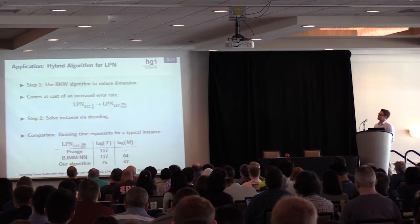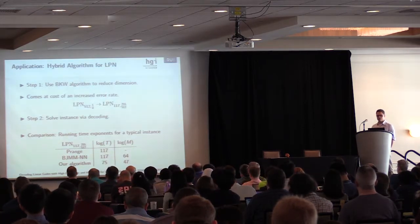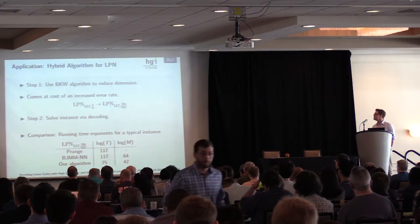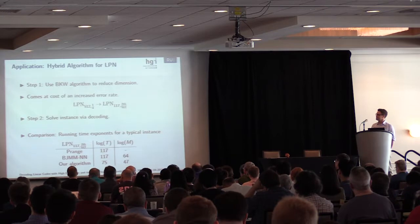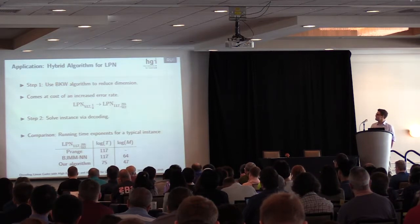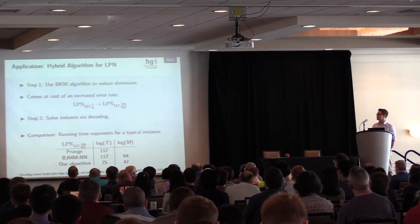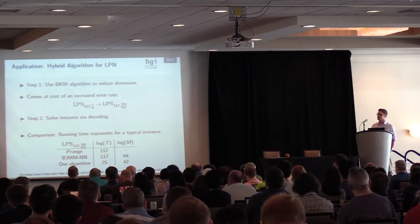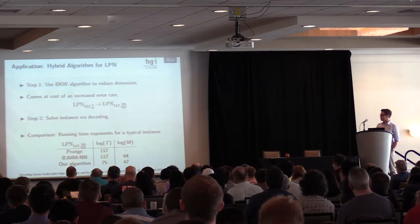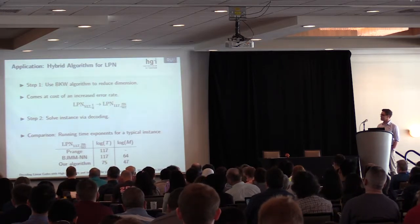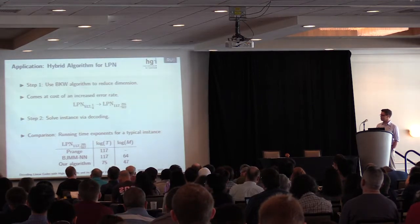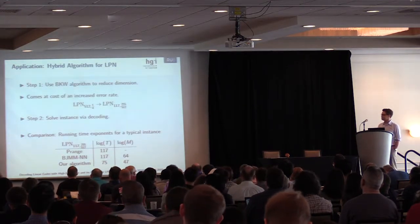The hybrid algorithm does the following as the first step. The BKW algorithm is applied which reduces the dimension of the given LPN problem but this comes at the cost of an increased error rate. For example, if we have an LPN instance with dimension 512 and error 1/4th, this is reduced to dimension 117 but the error becomes 1/2. As the second step, this new instance is then solved by a decoding algorithm. As you can see, Prange and BJMM with nearest neighbors have a running time of 2^2^117 for this new instance, while our algorithm can reduce the running time to 2^2^75.